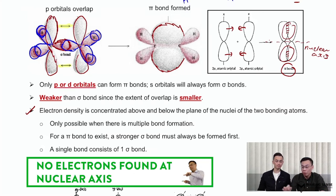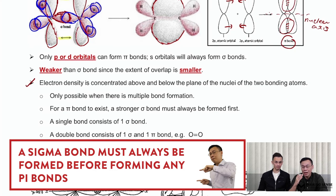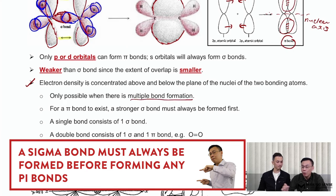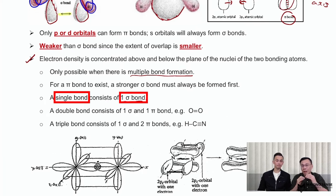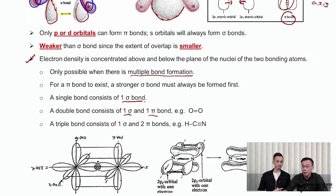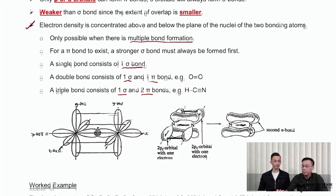A pi bond can only be formed when a prior sigma bond has already been formed — pi bonds are only involved in multiple bond formation. For a normal single bond, it just consists of one sigma bond. For a double bond, the first bond formed is sigma, the second bond formed is pi. For a triple bond, the first bond formed is still sigma, and the other two remaining bonds are then pi bonds.